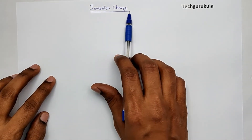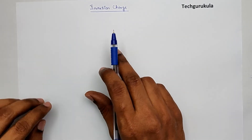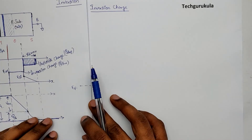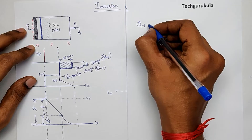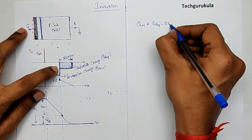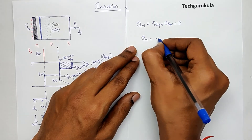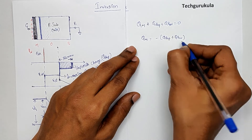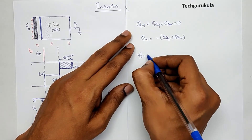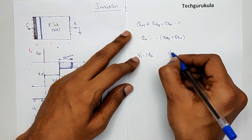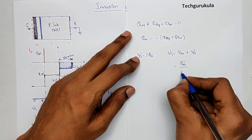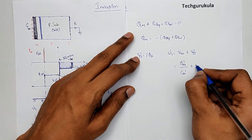In this section we will see inversion charge and its formula — we will derive it. Taking the previous discussion on inversion mode: the charge balance gives Q_m plus Q_depletion plus Q_inversion equals 0, so Q_m equals minus of (Q_depletion plus Q_inversion). In inversion mode, psi_s equals 2*phi_f, and Vg equals V_ox plus psi_s, which is Q_m_prime over C_ox_prime plus 2*phi_f.